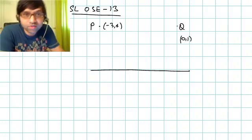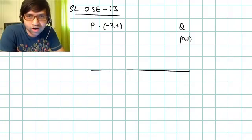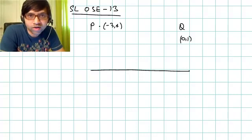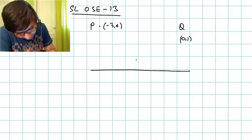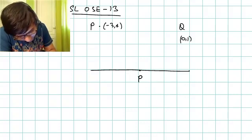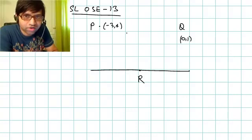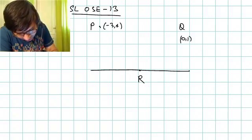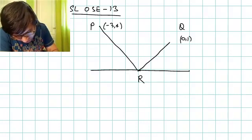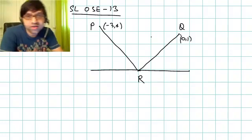Basically he starts at P and reaches at Q, and it is given that in between he touches the x-axis. Starting at (-3, 4) and reaching at (0, 1), in between he touches the x-axis and then changes direction. Let's say this is the point where he changes his position. It's mentioned that he travels in a straight line, not in a curved manner but in a straight line. So from P he goes to R and then R to Q.